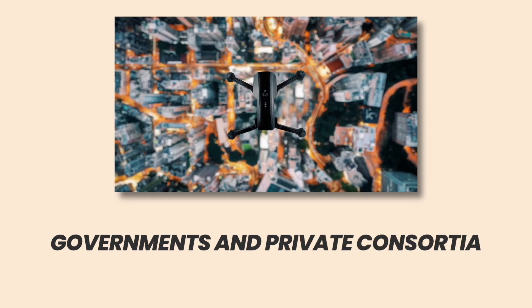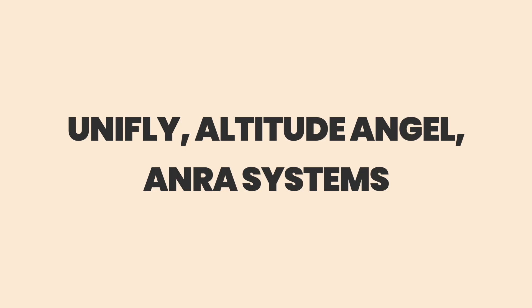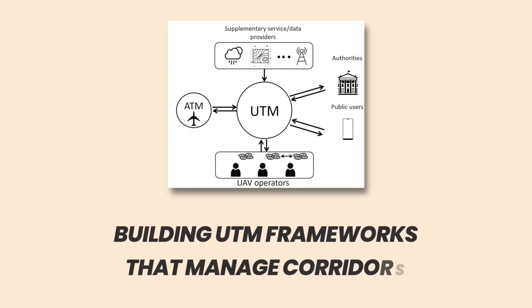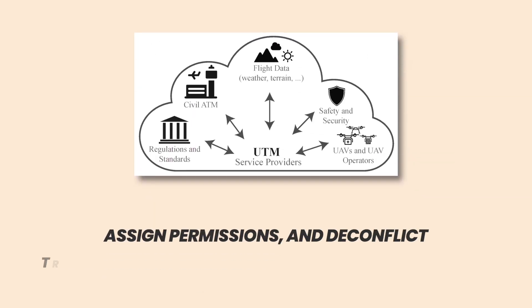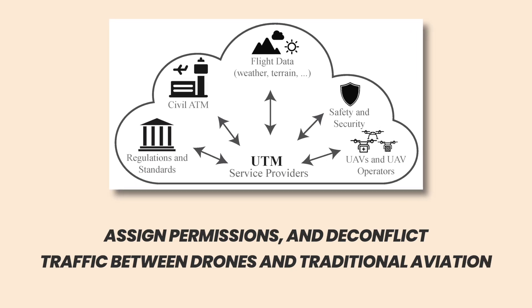Governments and private consortia, think FAA-NASA pilots, Unifly, Altitude Angel, ANRA Systems, are building UTM frameworks that manage corridors, assign permissions, and de-conflict traffic between drones and traditional aviation. Level 10.